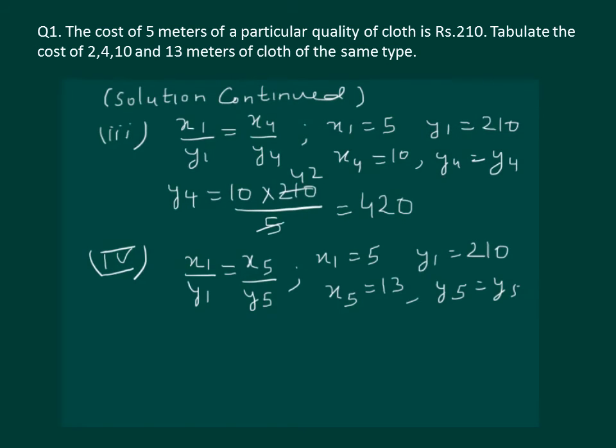Let us complete the table and find the value of y5. We have x5 is equal to 13 and on substitution we will get y5 is equal to 13 into 210 whole divide by 5 and on solving we will get 546 rupees. That completes our table and now we have seen how we will use the concept of directly proportional to solve some of the problems that we come across.